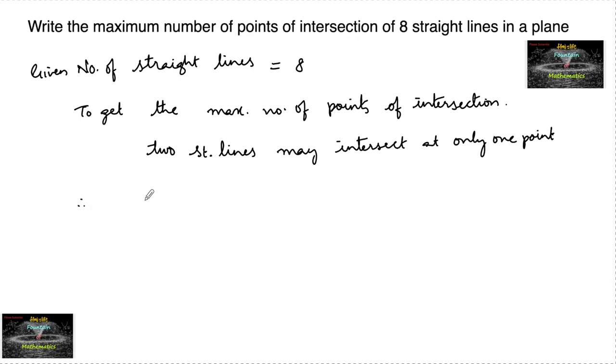So therefore, maximum number of points of intersection of 8 straight lines can be given as 8C2. Because from two straight lines, you are getting one point. So total 8 lines are there, selection of two straight lines among the 8 straight lines.